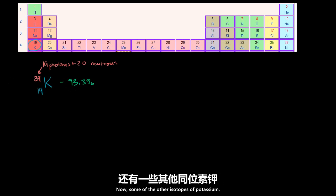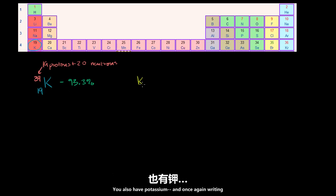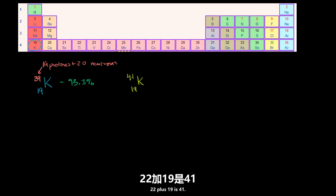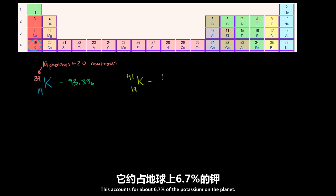Now some of the other isotopes of potassium: you also have potassium-41, which would have 22 neutrons. 22 plus 19 is 41. This accounts for about 6.7% of the potassium on the planet.